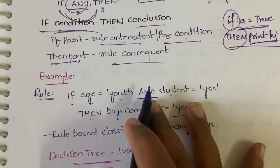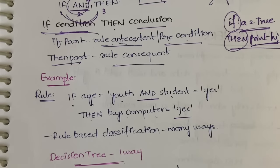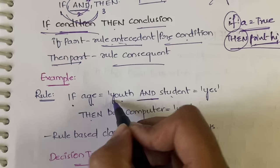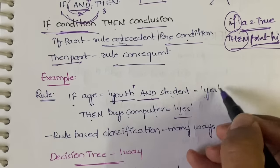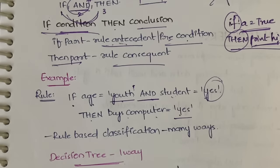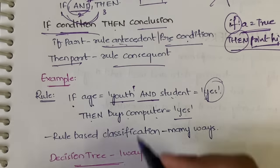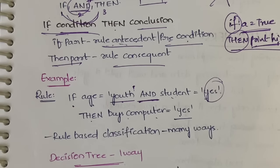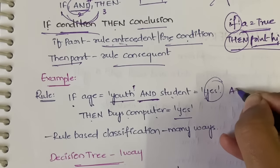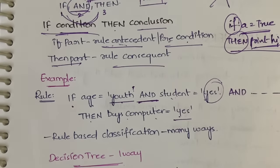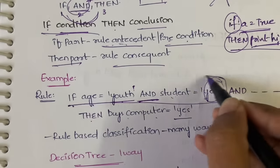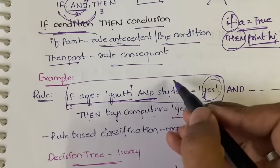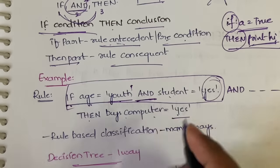The two conditions are: the age should be equal to youth, and the person has to be a student. Since there are two conditions, we use 'and'. If there is one more condition, you can write one more 'and' and continue. All of this up to the 'then' is called the rule antecedent or precondition, and the 'then' part is the rule consequent.